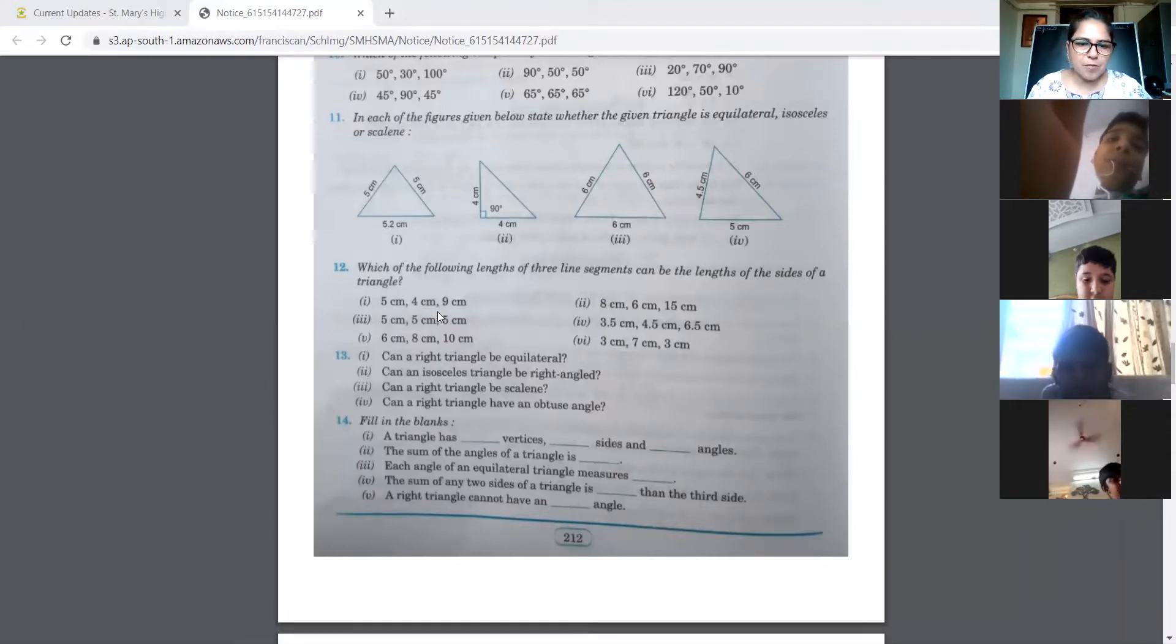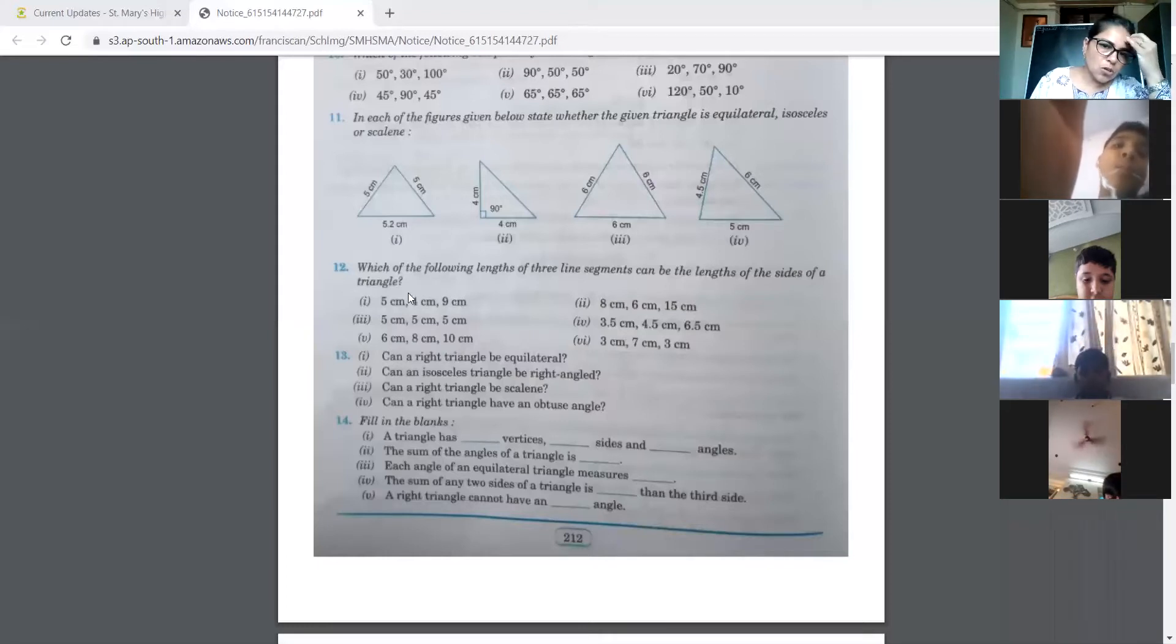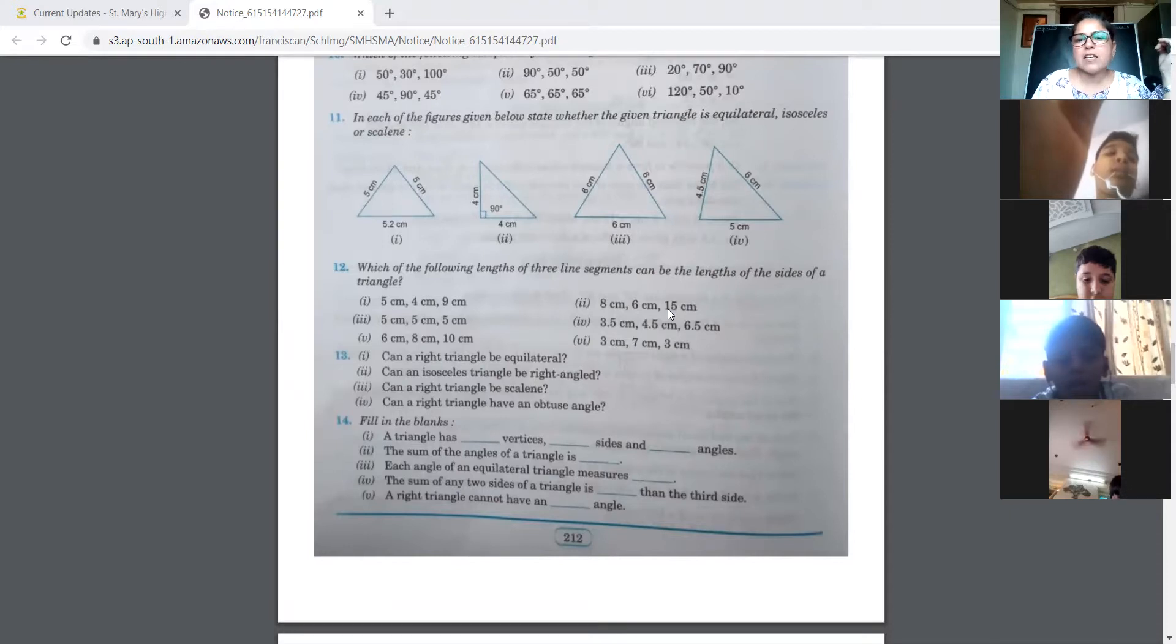But here when we are adding 5 and 4 we get 9, which is not greater than the third side which is 9. So this is not possible. You write no over here. Now in this one when you add 8 and 6 you get 14. 14 is again not greater than 15 centimeters, therefore this is also a no.